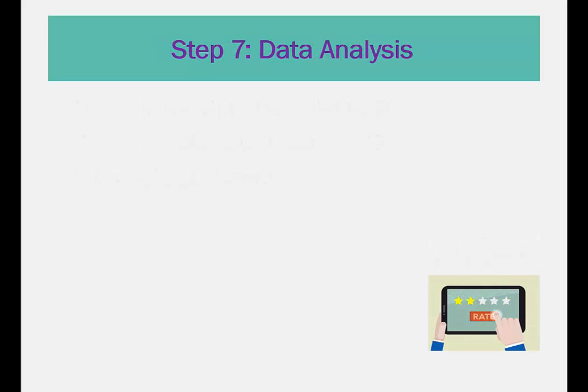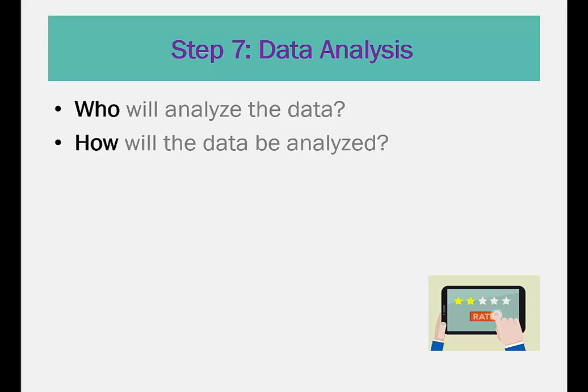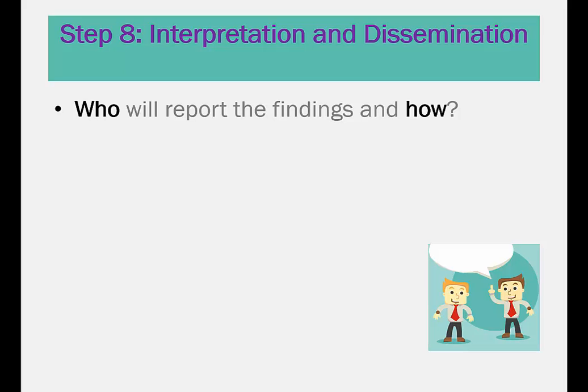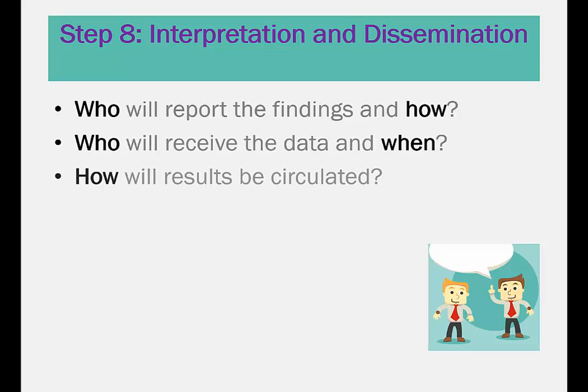Step 7: Data analysis. It is important in this step to identify who will analyze the data and how the analysis will be conducted. Remember, data analysis doesn't have to be a complicated process. Step 8: Interpretation and dissemination. In this step, several questions will be explored, including: Who will report the findings and how? Will the findings be submitted to a peer-reviewed journal? A press release to the media? A newsletter to stakeholders? Who will receive the data and when? How will the results be circulated?